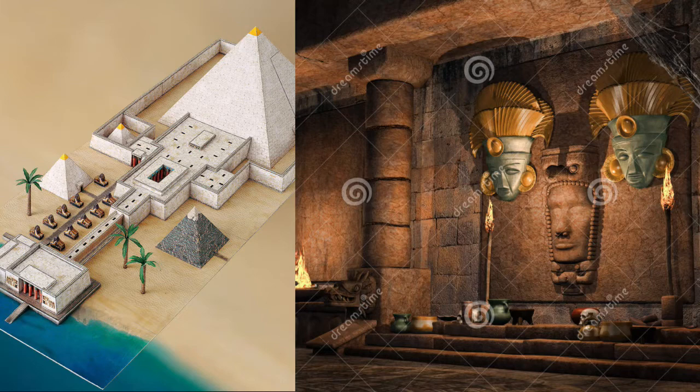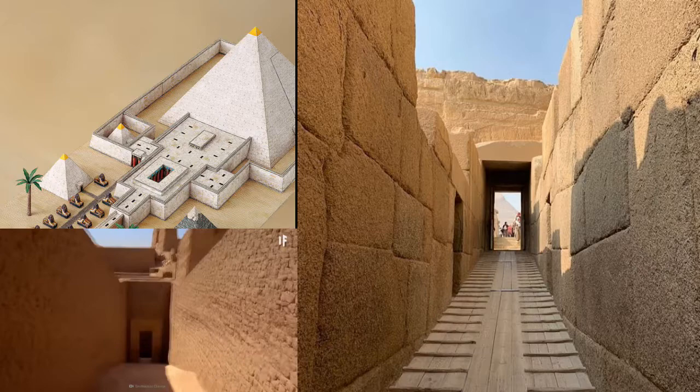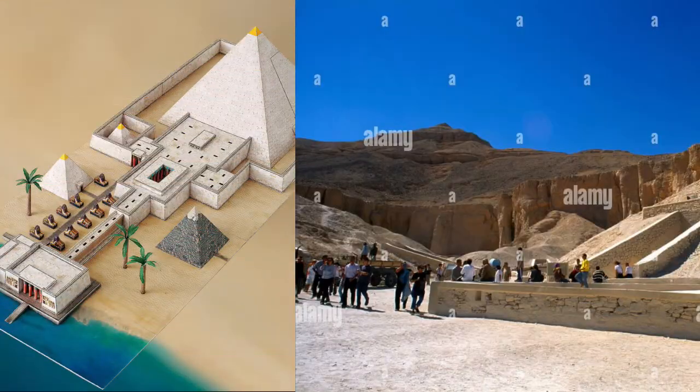Parts of a pyramid: 1. Offering chapel. 2. Mortuary temple. 3. Elevated causeway. 4. Valley building.